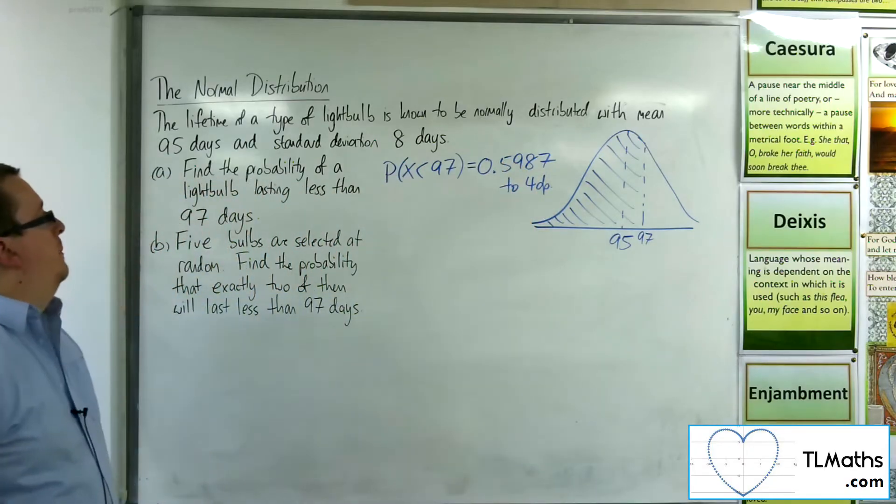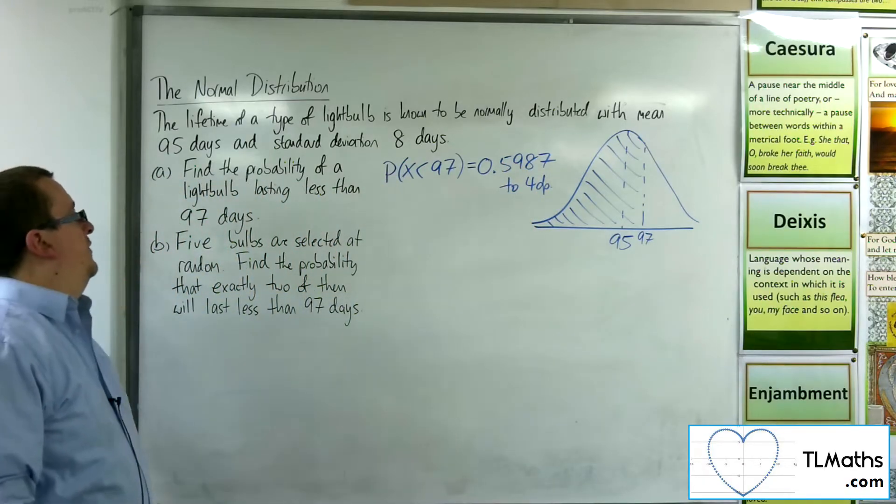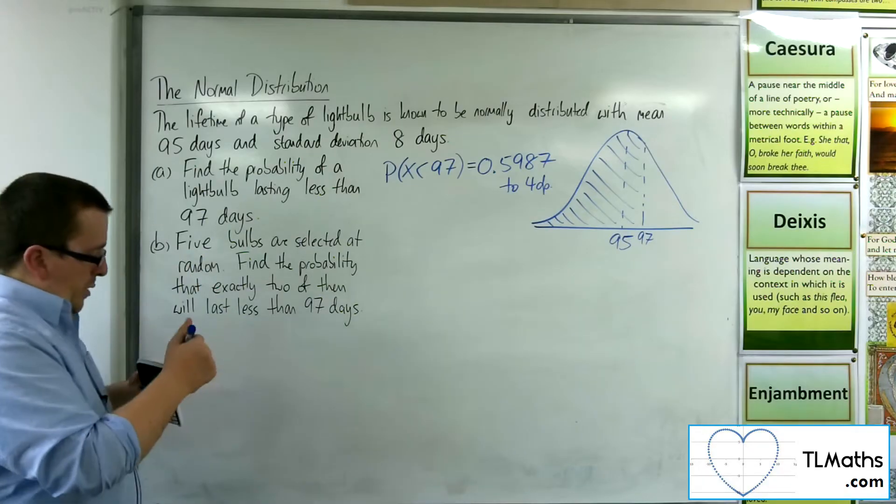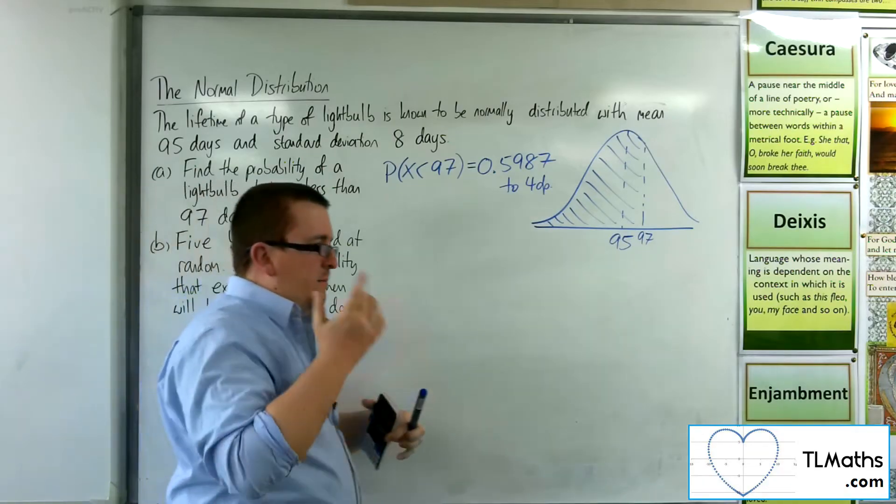So that's the probability of a light bulb lasting less than 97 days. Now, part B. This is the more interesting bit.